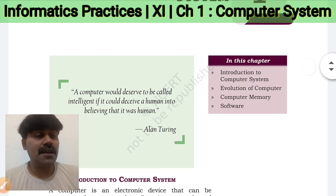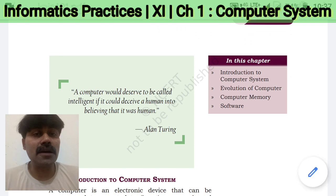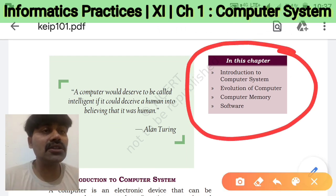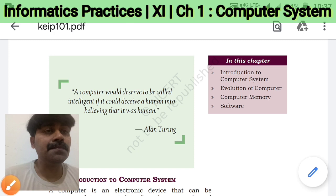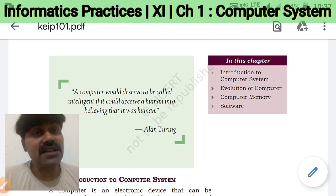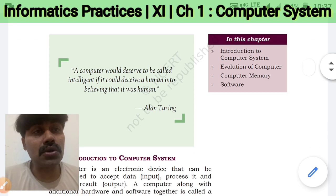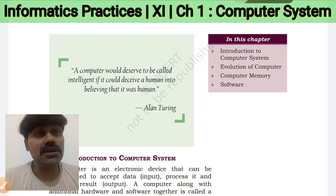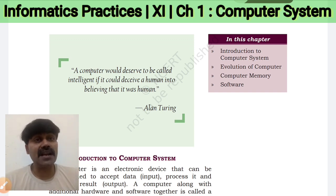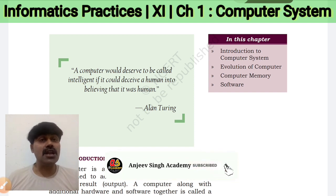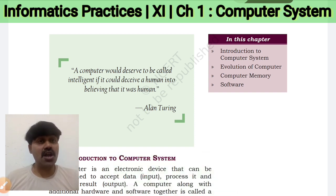So let's see what you will learn in this chapter. You will learn: Introduction to Computer System, Evolution of Computer, and Computer Memory and Software. I will start this chapter with the good quote of Alan Turing, as he told that a computer deserves to be called intelligent if it could deceive a human into believing that it was a human.